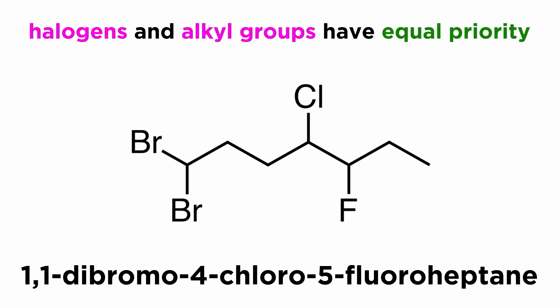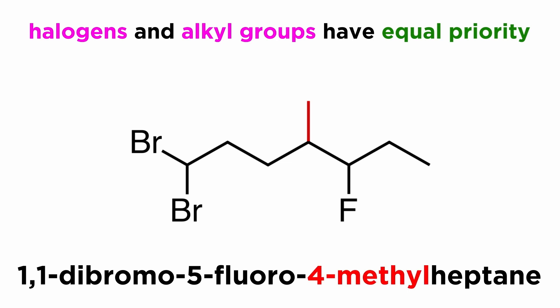This is no different than what we learned for alkyl substituents, and once again halogens and alkyl groups have equal priority. If we mix them up, none of the rules will change. Turning this chloro group into a methyl group, the only difference is that we have to put M for methyl last, after F for fluoro, and that will instead give us 1,1-dibromo-5-fluoro-4-methylheptane.